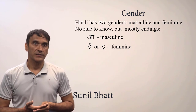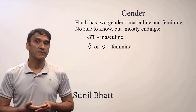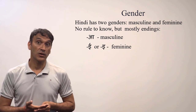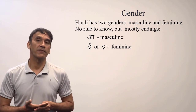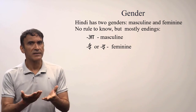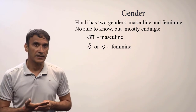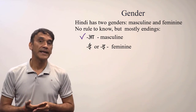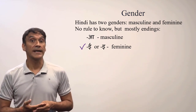The next grammar point is gender in Hindi. All nouns have grammatical gender — they either belong to masculine gender or feminine gender. There's no specific way of knowing the gender of a noun, but there's a rule of thumb that students can use: most nouns ending in 'a' are masculine, and most nouns ending in 'e' belong to feminine gender.